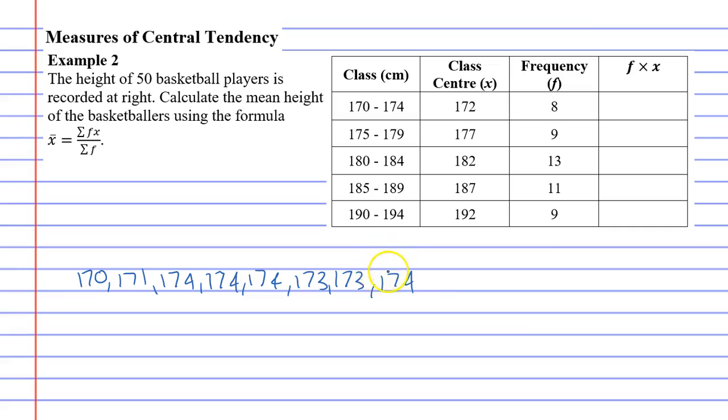And what is suggested instead is to take the class center, which in this case is 172, and just assume that every single one of these 8 players were at 172, at the middle mark.